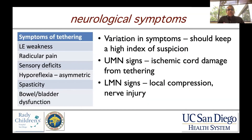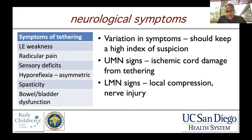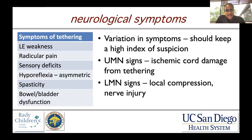When discussing neurological symptoms associated with tethered spinal cord, there can be a wide variation, so you need to keep a high index of suspicion. Symptoms include lower extremity weakness, radicular pain, sensory deficits, hyporeflexia (which can appear asymmetric), spasticity, bowel and bladder dysfunction, and non-radicular pain.